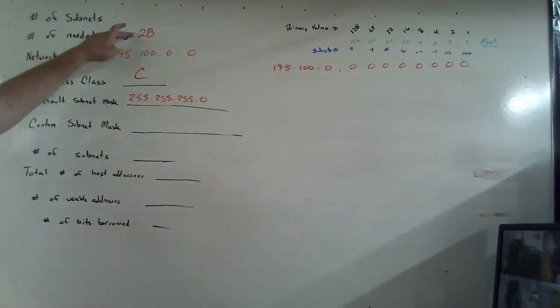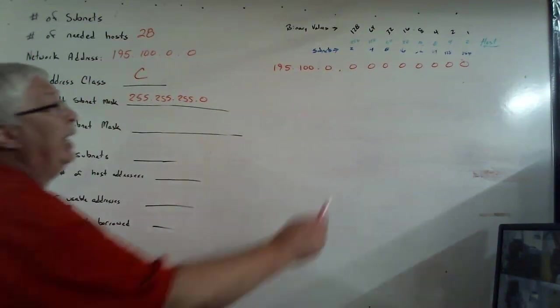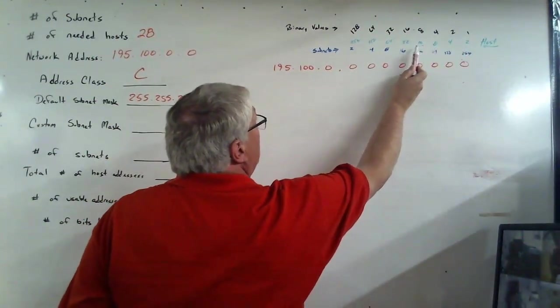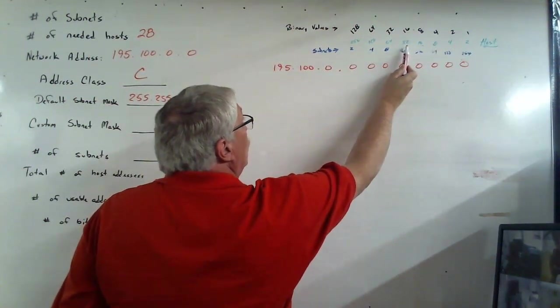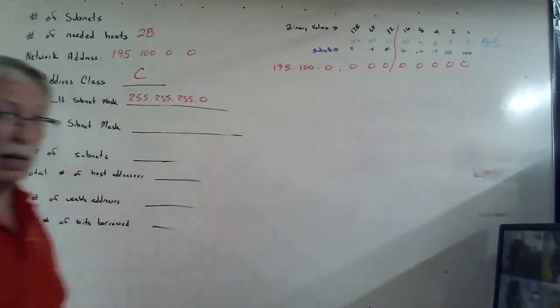Now, I already have my subnet numbers up there, my host numbers, my binary values. All I have to do is look at what am I trying to solve for. The answer is 28. The secondary answer is host. So, I need to look at the green numbers where it says host. And I need to start until I pass a number that will allow me to get 28. So, I know I cannot get 28 from 2, 4, 8, or 16, but I can on 32. So, once I pass 32, that's where I draw my line.